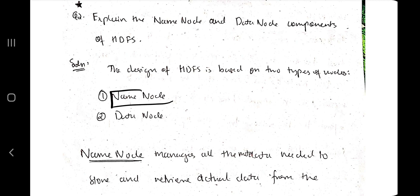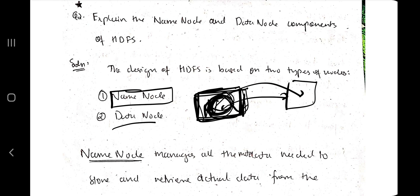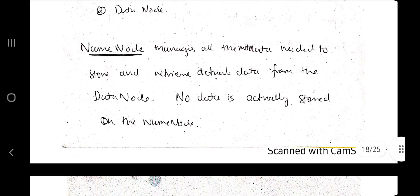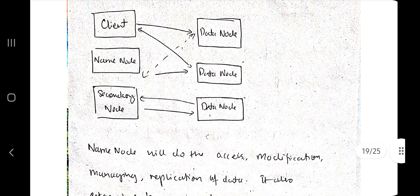The name node manages all the resources — it's like a manager. The data node stores the actual data. The name node holds metadata about what type of data is stored — for example, it stores that integer values are stored in a particular data block. The first point to write is: the name node manages all the metadata needed to store and retrieve the actual data from the data node. No actual data is stored in the name node.